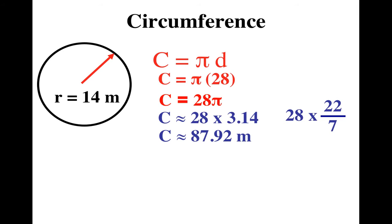Now, why do people like to use 22/7? Well, in this case, it would have been really easy. Because when you simplify, notice, I get 4 times 22, which is 88. And isn't 88 incredibly close to 87.92? Yeah, close enough.